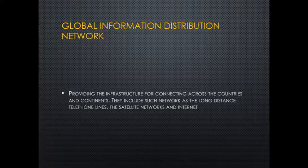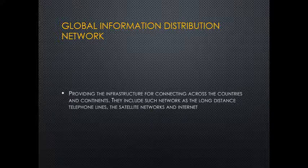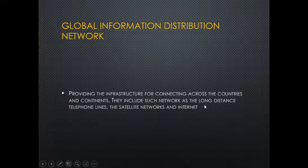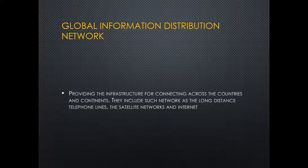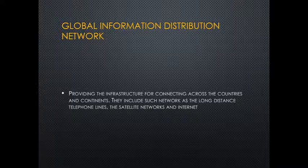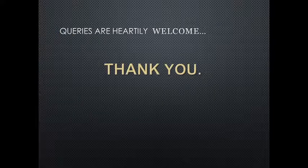The third component is the global information distribution network, which provides the infrastructure for connecting across countries and continents. It is used for long-distance communication, including long-distance telephone lines, satellite networks, and the internet. In summary, the three main components of the information superhighway are: network access equipment, access road or media (local on-ramps), and the global information distribution network. If you have any queries, feel free to ask. Thank you.